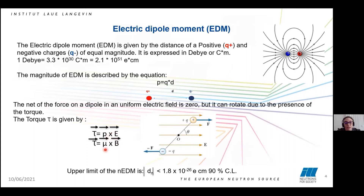This is equal to saying that the torque equals the magnetic moment times B, that is the magnetic field. But probably what you are wondering is why I'm talking about electric dipole moment in a neutron, because a neutron has an overall charge of zero. What the EDM experiment in a neutron is going to look for is the charge distribution. The upper limit that has been studied until now is less than 1.8 times 10 to the power of minus 26.